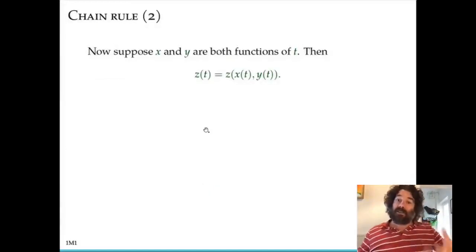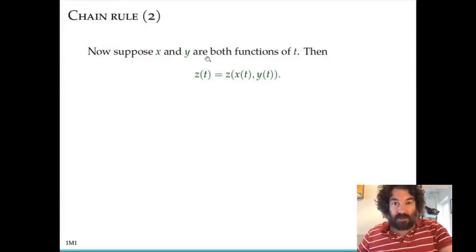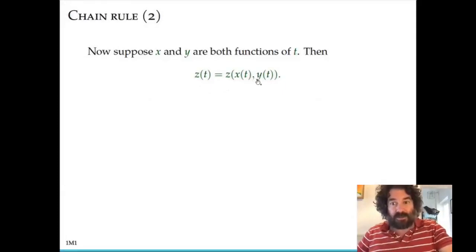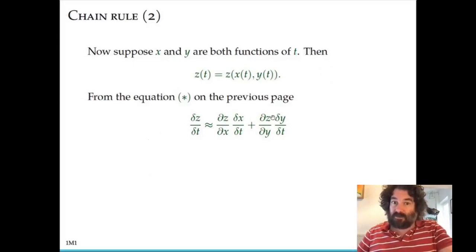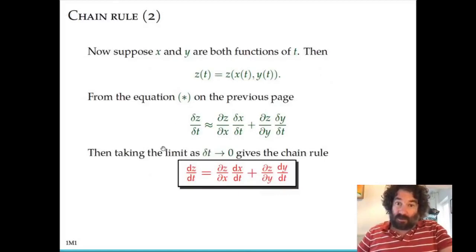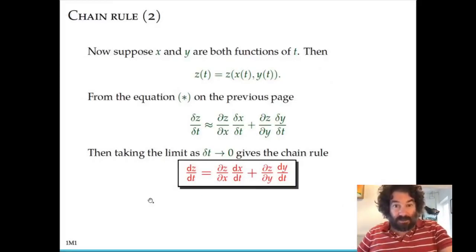Now suppose that x and y are also functions of t. So in fact z is a composition of two functions — it is a function of t, obtained as a composition of z (a function of two variables x and y) where x and y each depend on t. Then from the previous equation, the change in z is approximately the partial derivative of z with respect to x times delta x, plus the partial derivative of z with respect to y times delta y. Dividing by delta t and letting delta t go to zero, this converges to the chain rule formula: the derivative of z with respect to t equals the partial derivative of z with respect to x times dx/dt plus the partial derivative of z with respect to y times dy/dt.